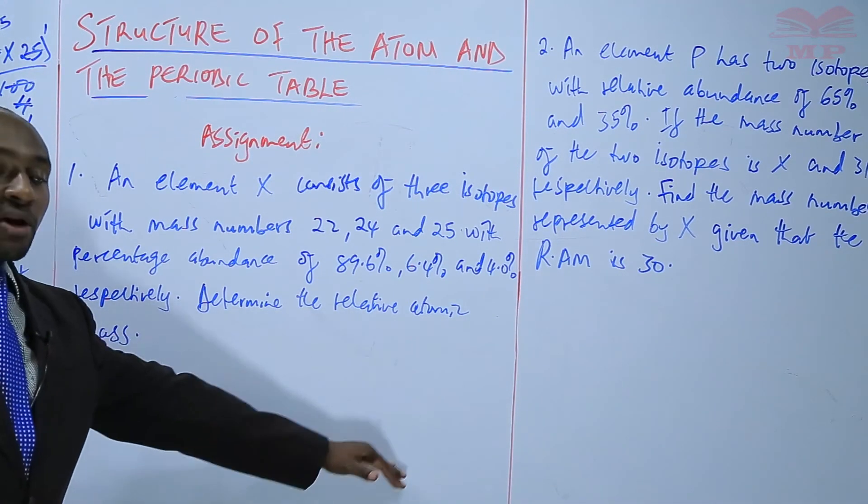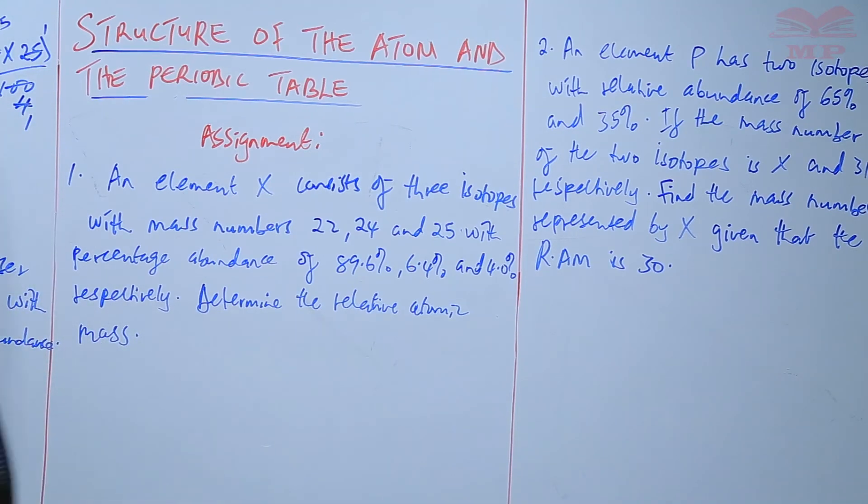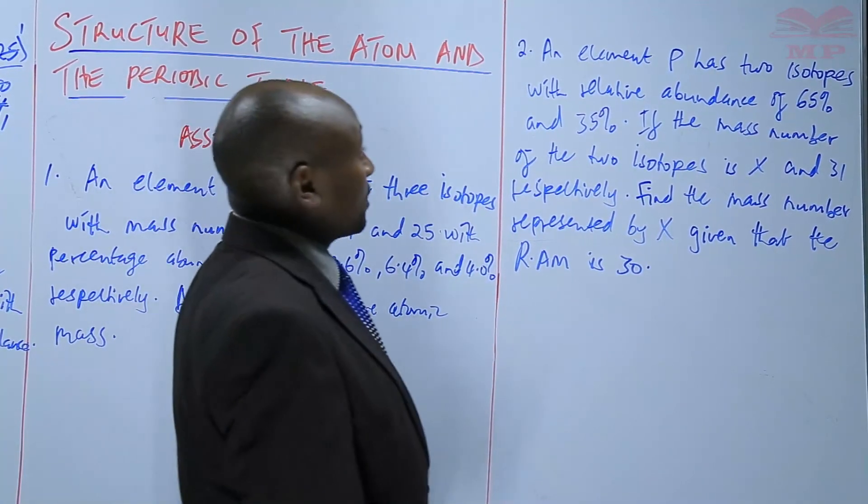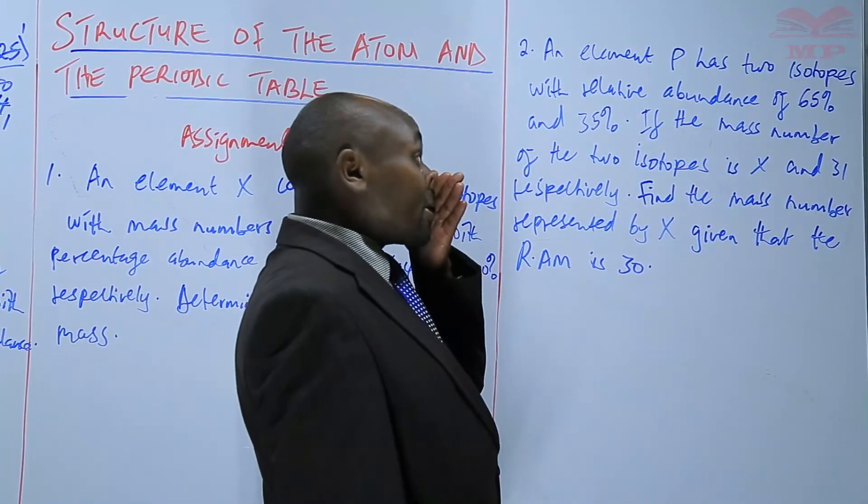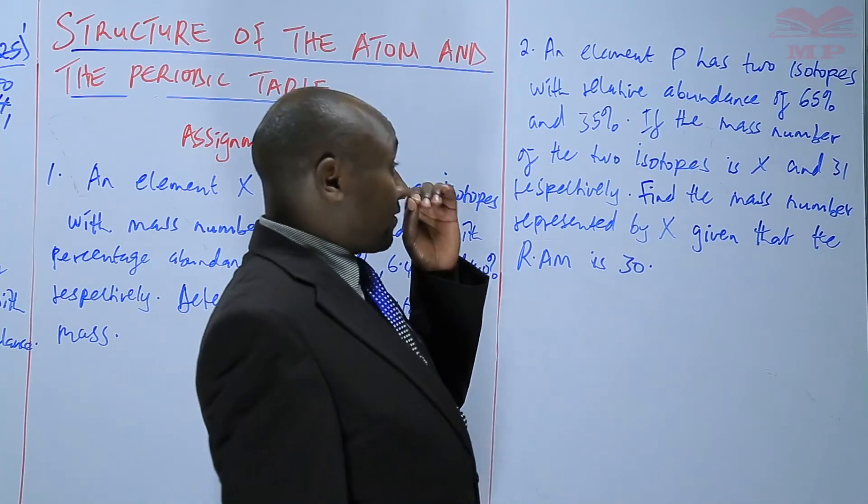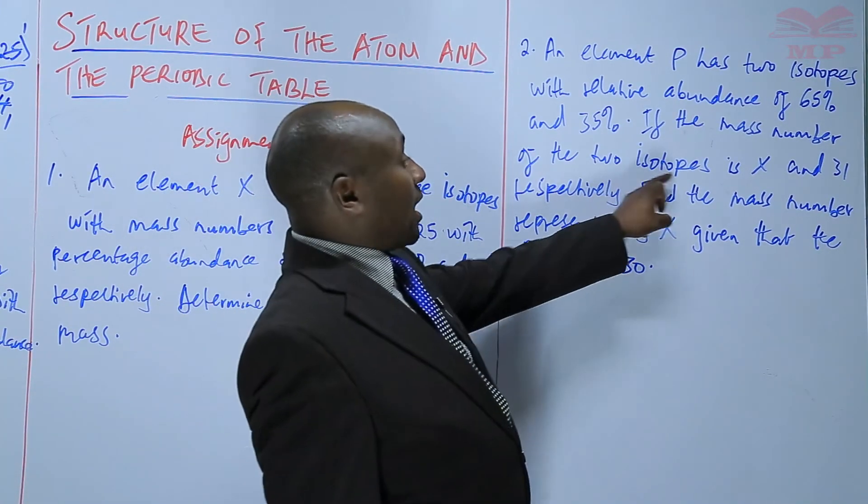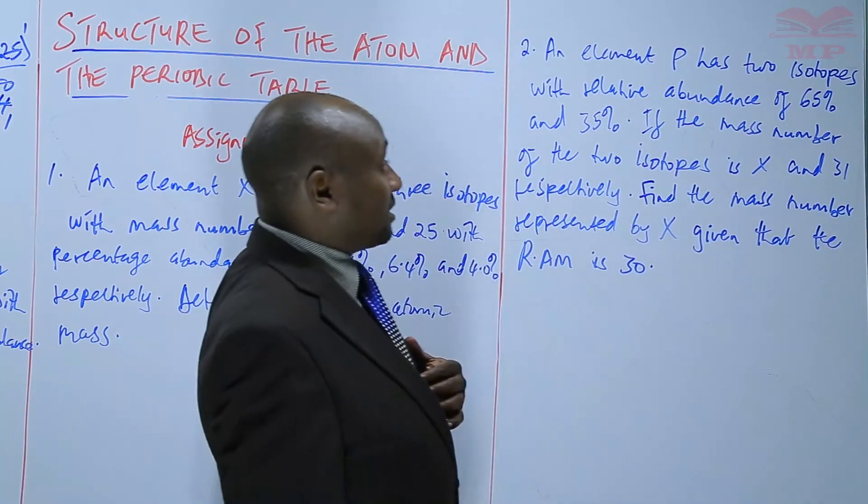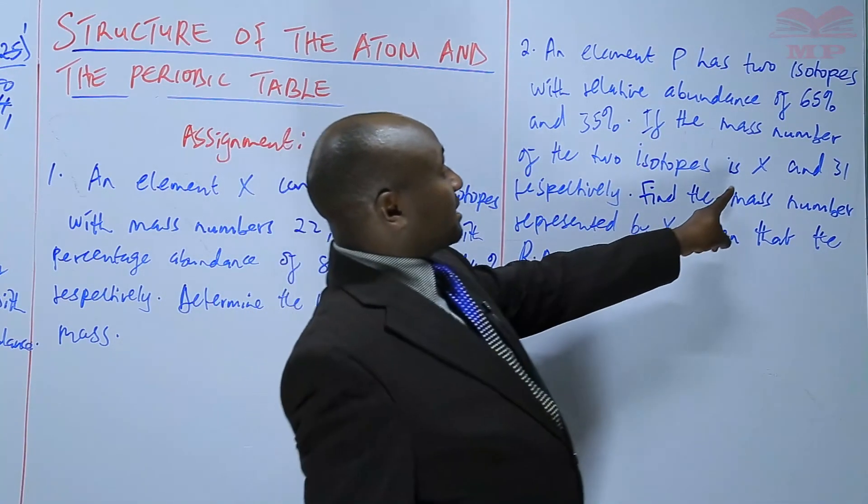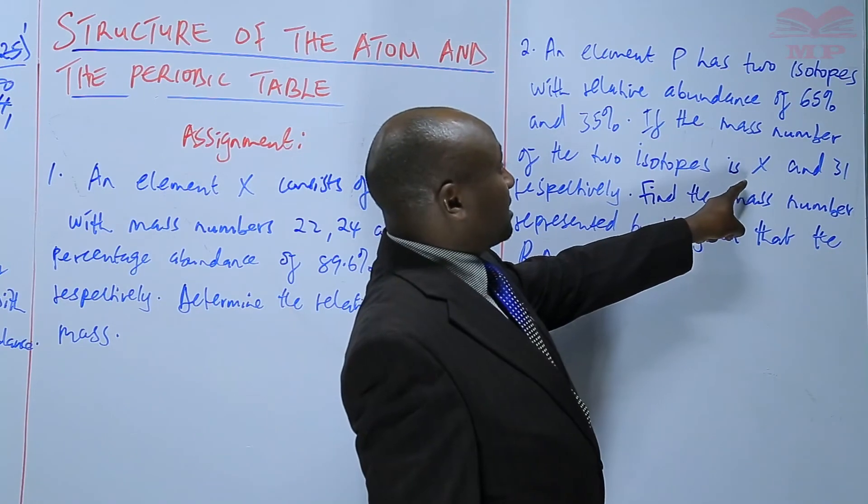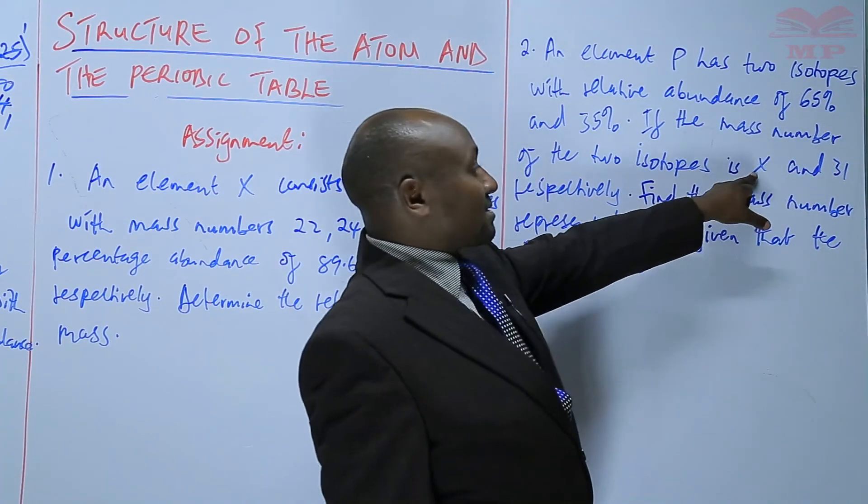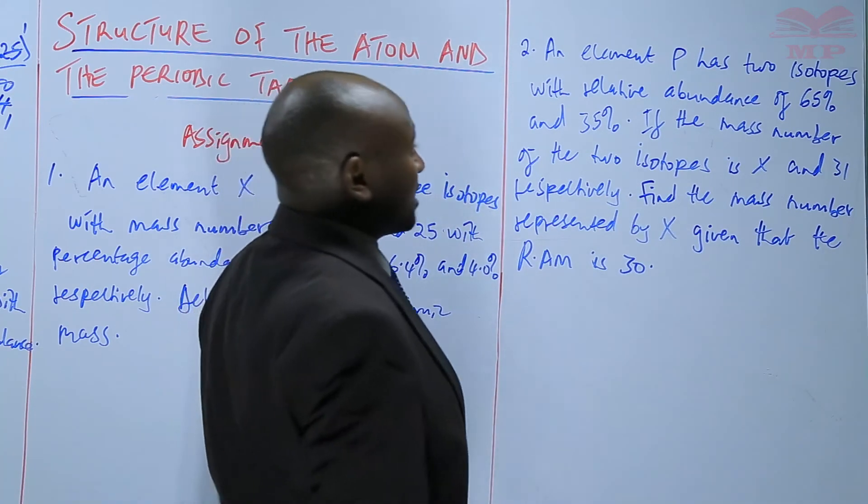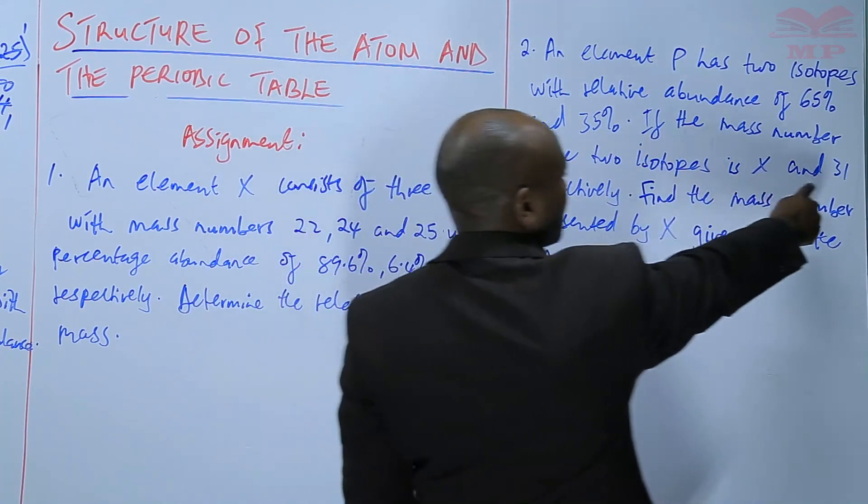So, there you'll just apply the formula as it is. In question number two, an element P has two isotopes with the relative percentages of 65 and 35. If the mass number of the two isotopes is X and 31 respectively. So, that means that the one with a percentage of 65 has a mass of X. So, we don't know the mass and the one that has a percentage of 35 has a mass of 31.